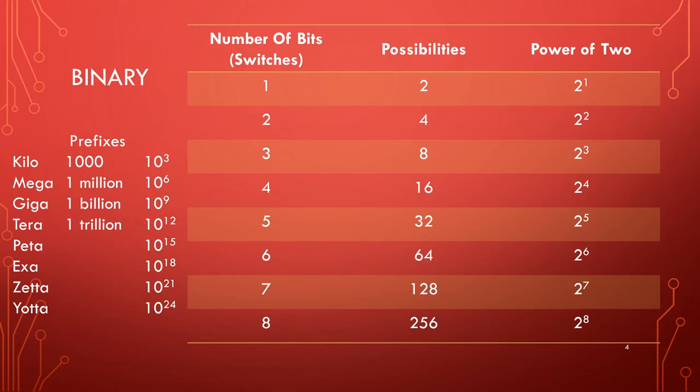That takes us to the wonderful world of binary. Many of you will know it; some of you will be like what is binary. Binary is another mathematical system — but this is how computers work. All binary is is zeros and ones. Every piece of information on your computer ends up being zeros and ones somehow. If you only have one bit — one binary bit — that bit can be a zero or a one. Those are the only two options: on or off, true or false, high or low.